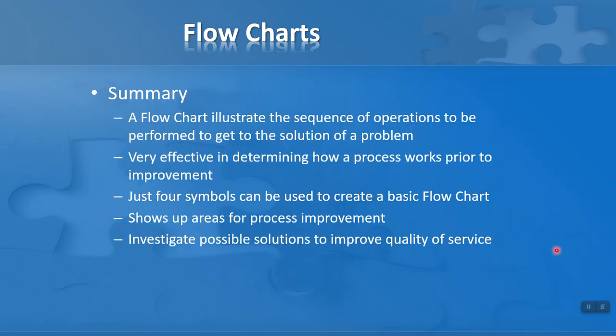So in summary, flowcharts can illustrate the sequence of operations to be performed to get to the solution of a problem. That makes it a very powerful problem-solving tool. It's very effective in determining how a process works prior to improvement. We only need four basic symbols to create a basic flowchart. And of course, once you get the hang of flowcharts, maybe then you could go on to learn how to use other symbols in a flowchart. Flowcharts show up areas for process improvement, as we've seen in our previous example. And finally, we can investigate possible solutions to improve quality of service using a flowchart. We can also use it for improving lots of other processes as well. So that's how flowcharts are used in the problem-solving process.